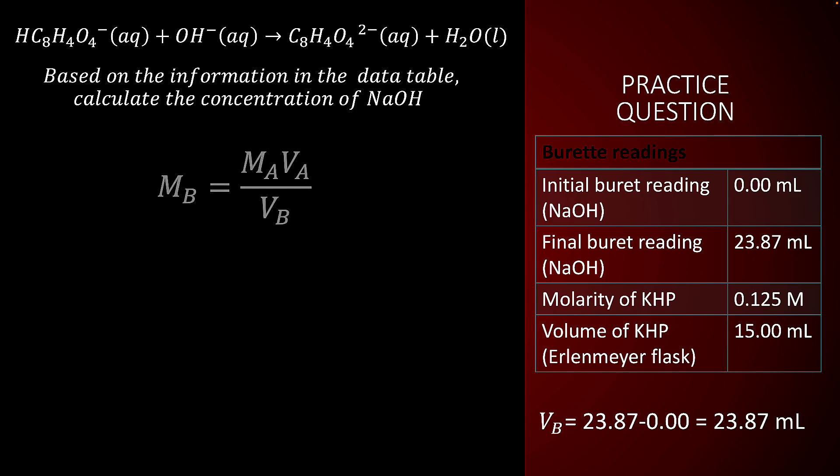Here's an example. Suppose a titration results in the following data: the initial and final burette readings are shown. We determine the amount of hydroxide added by subtracting the initial burette reading from the final burette reading. This results in a difference of 23.87 milliliters. Using this as VB in our formula with the other known values results in a concentration of 0.0786 molar.